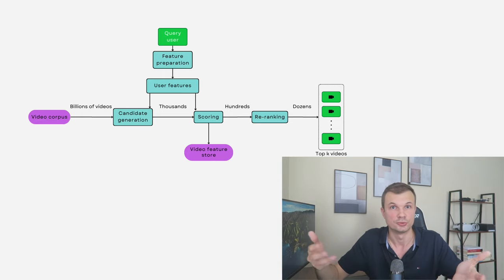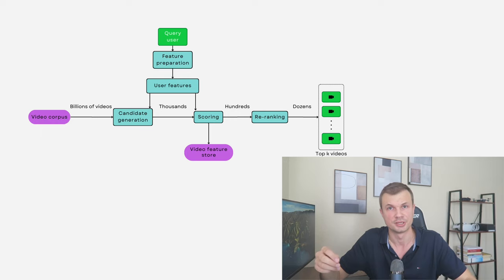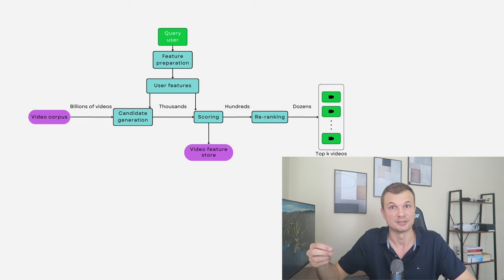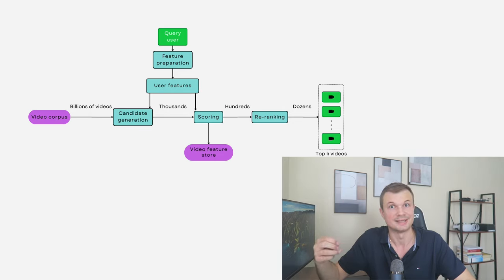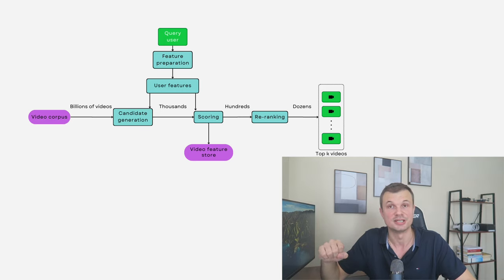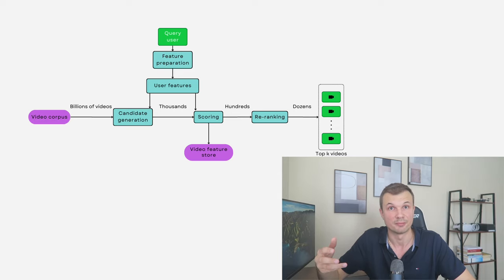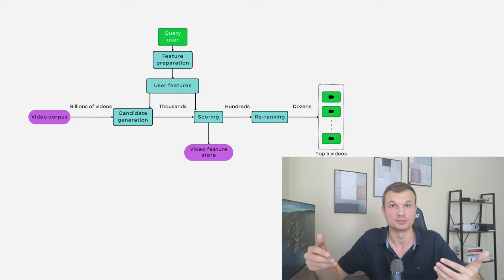These embeddings are stored as vectors in our database and used by our neural network algorithm to train a model that filters billions of videos down to thousands based on user interest. Once we have thousands of candidate videos, we score them and lower the amount from thousands to hundreds using a different, more sophisticated algorithm. We then reduce further from hundreds to a ranked set, and enable our ranking algorithms — a multi-stage process — until we get a dozen videos to recommend to the user right now as they open Instagram.